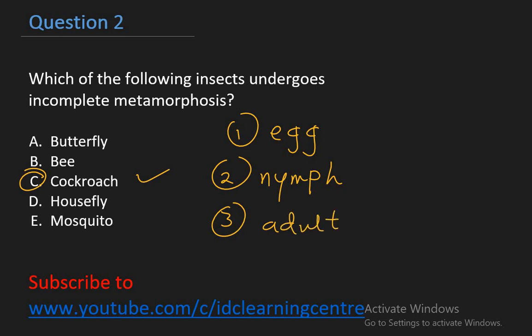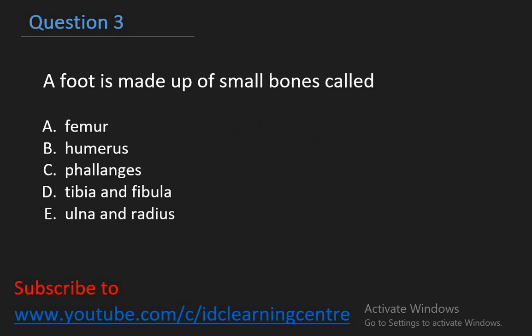Let's take the next question. Question three. A foot is made up of small bones called A. Femur. B. Metacarpus. C. Phalanges. That is the answer. Phalanges are the bones that make up the fingers of the hand and the toes of the foot. So that's the right answer.